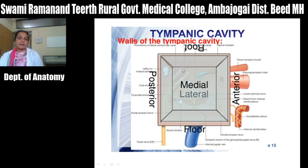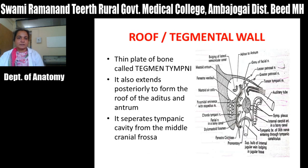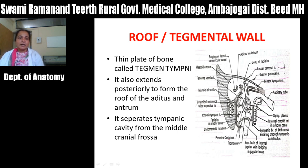Now we will see the tympanic cavity boundaries one by one: roof, floor, then medial and lateral wall, then anterior and posterior wall. The roof is wider than the floor, the anterior wall is narrower than the posterior wall, and the medial and lateral walls have convexity towards the tympanic cavity — just like the inside of an hour-glass appearance. The roof of the tympanic cavity is formed by a thin plate of bone called the tegmen tympani. It also extends posteriorly to form the roof of the aditus. This roof separates the tympanic cavity from the middle cranial fossa.